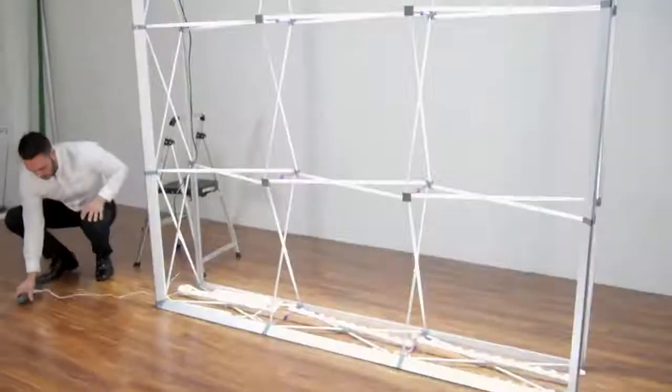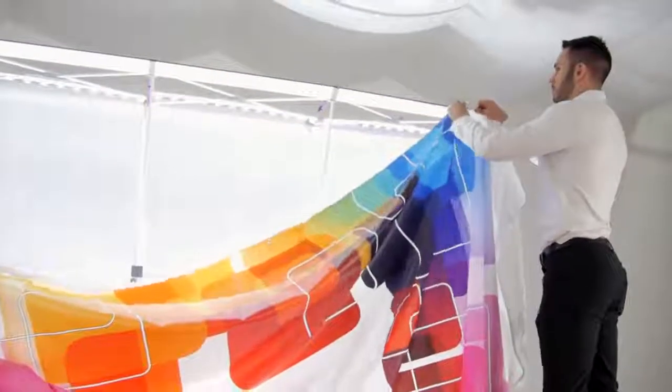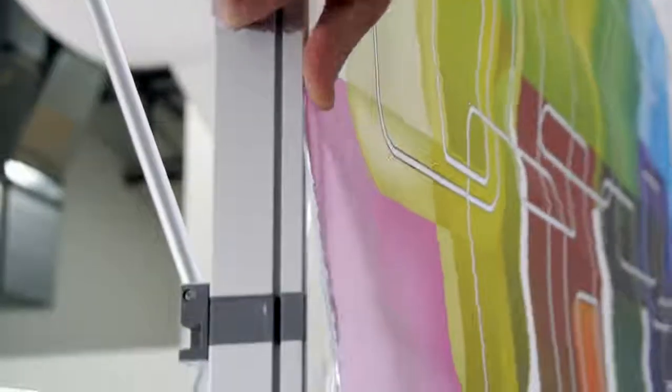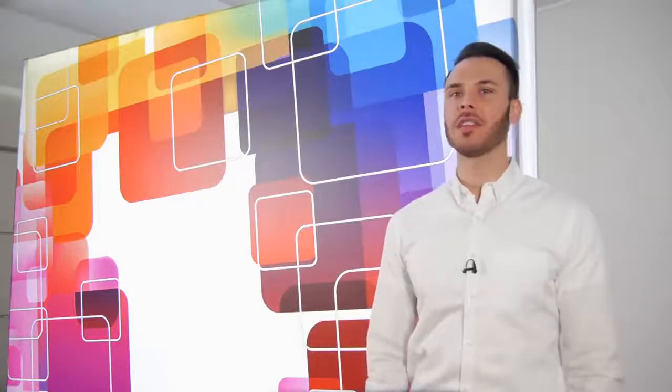Finish by attaching your front graphic into the zipper beaded hub along with the back opaque liner or graphic. To learn more about this brand new Embrace Backlit tension fabric display, please call us or visit our website today.